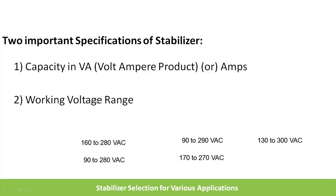The second specification is working voltage range, which is entirely dependent on the location of your house. If your house is in a region with high fluctuations, you should go for 130–300V or 90–290V. If your location has moderate fluctuations, you can go for 170–270V. This selection is entirely up to you.